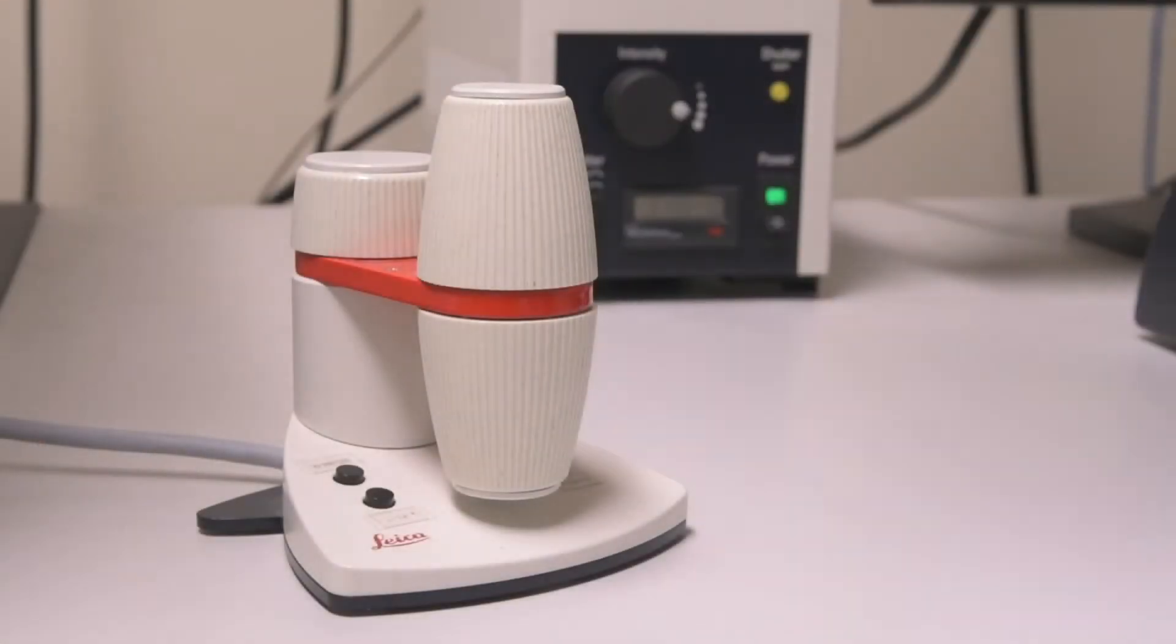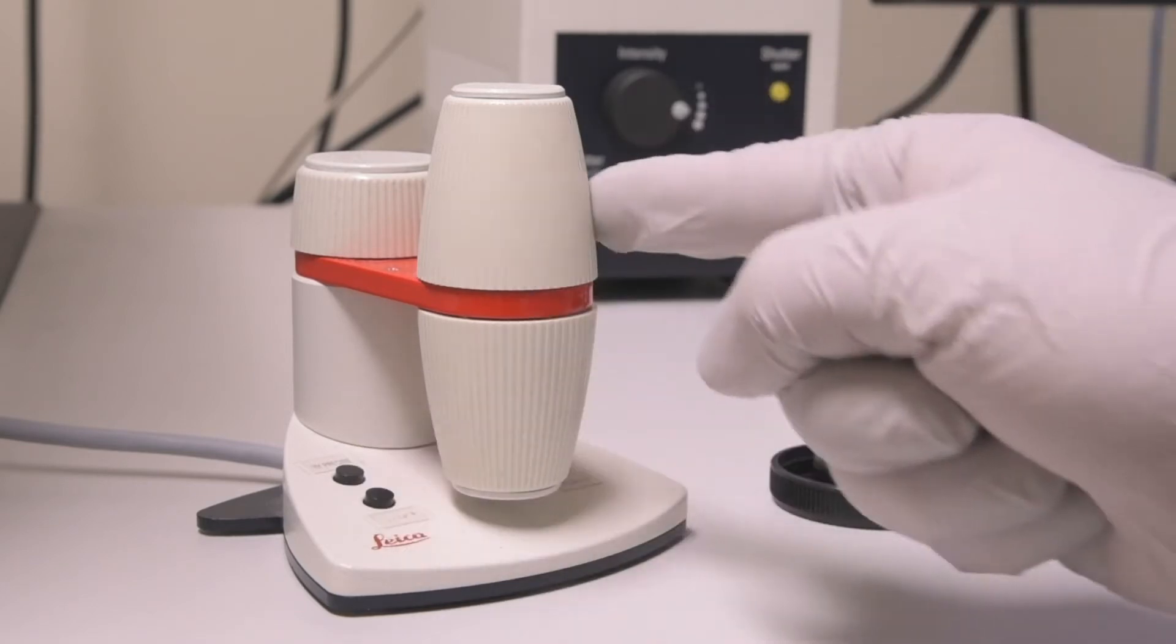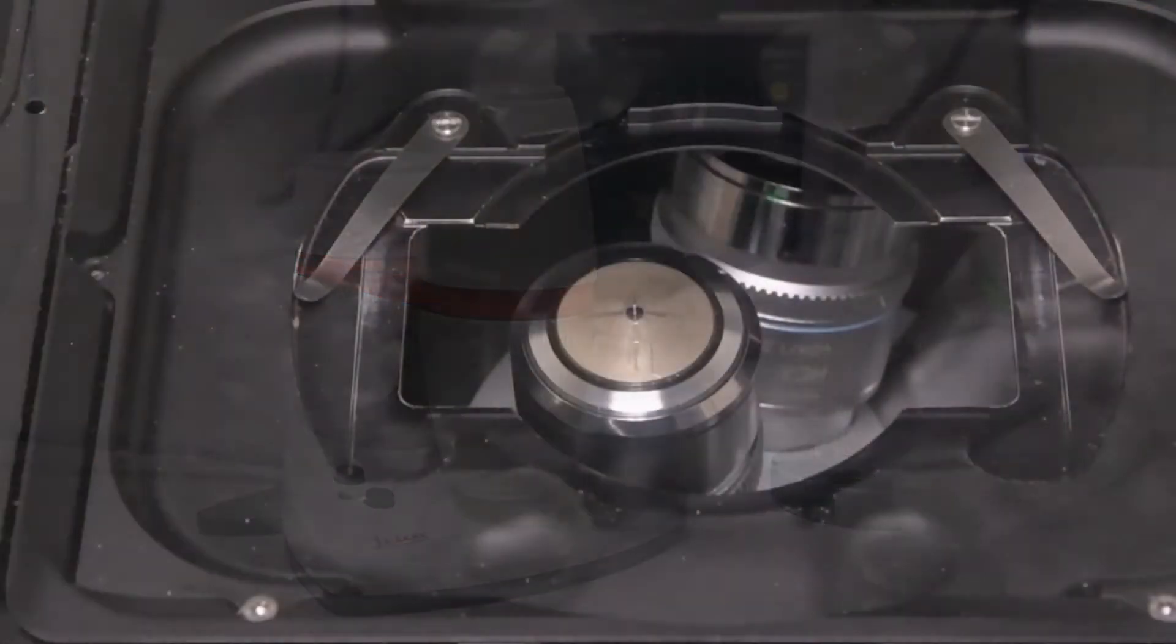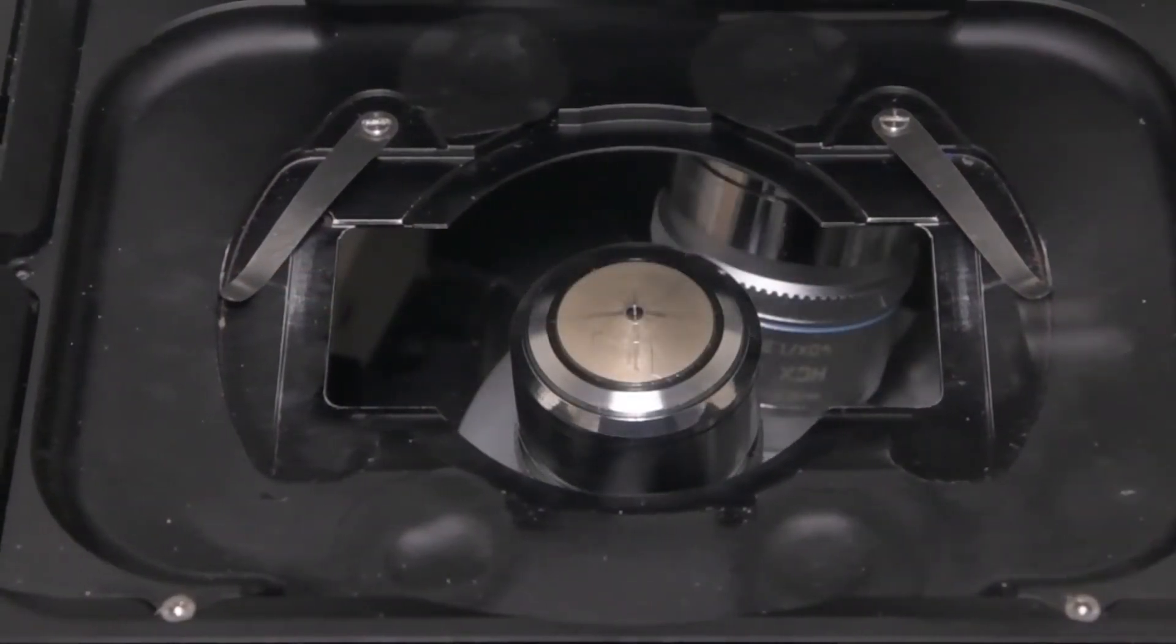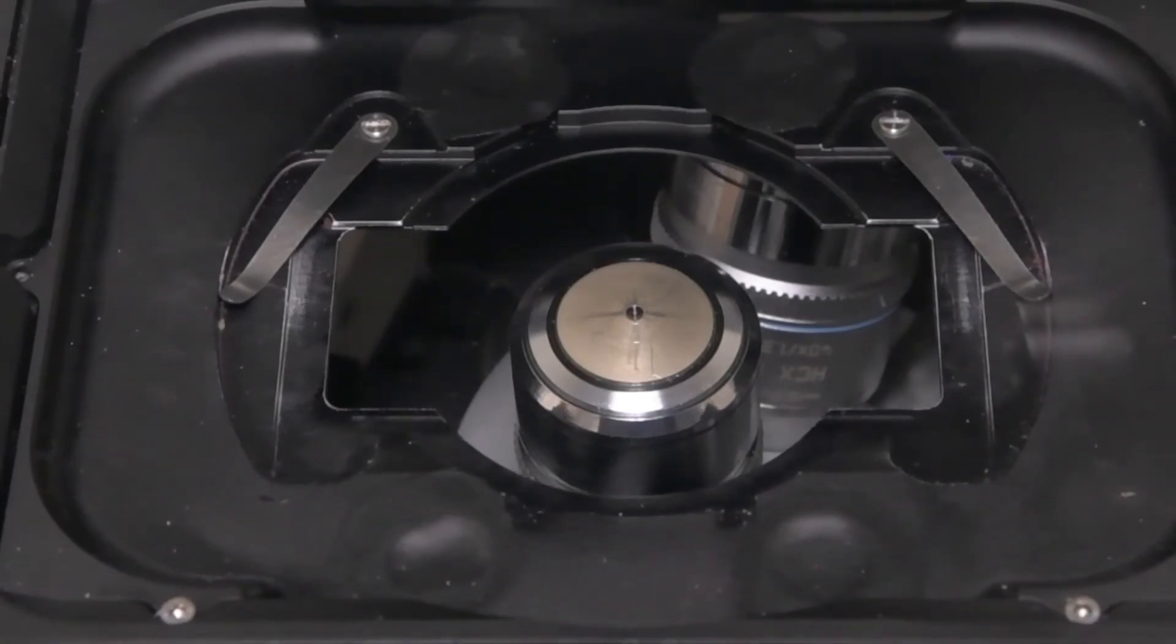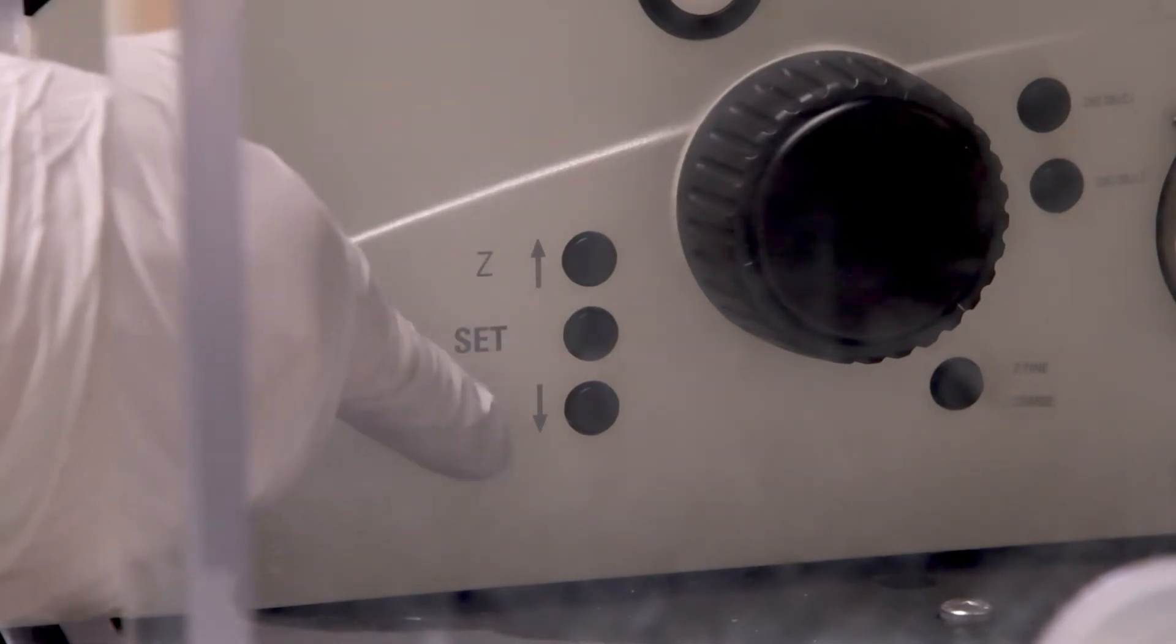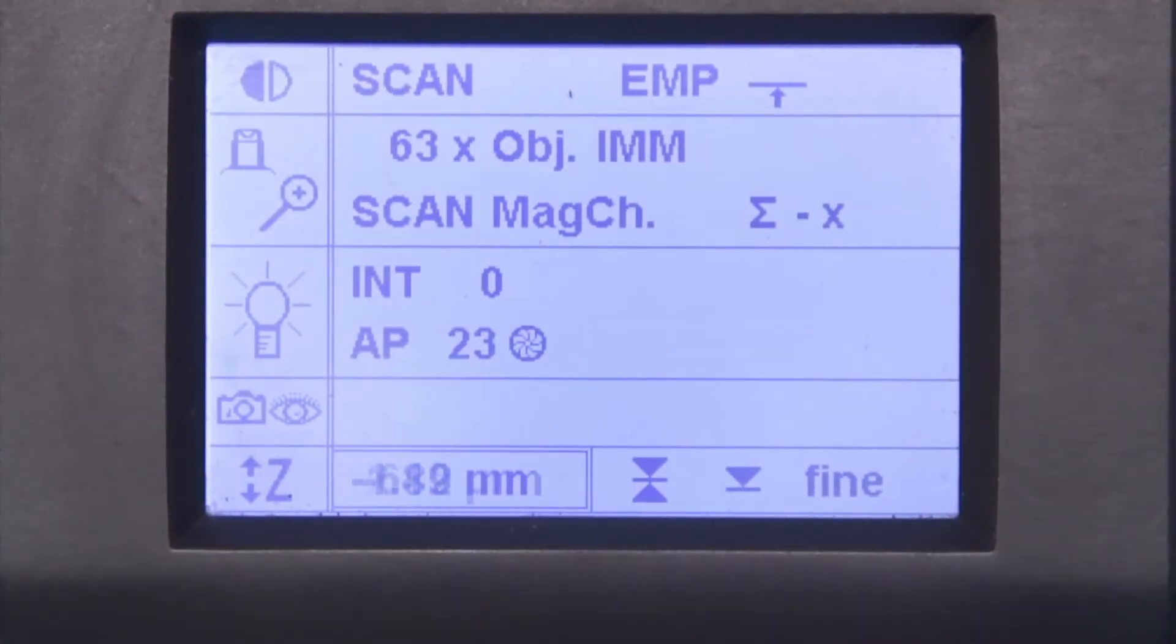If you started with the objective a little off-center, use the XYZ controller, click the course button, and move the stage, so that the objective is right in the middle of the opening. Look on the right side of the microscope and locate the three buttons towards the front again. Push the top button. This will bring the objective up to the zero set point.